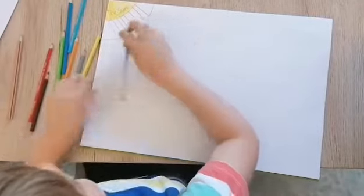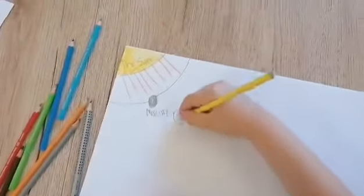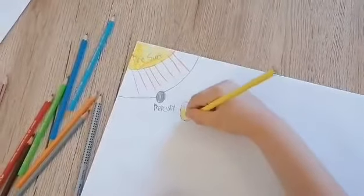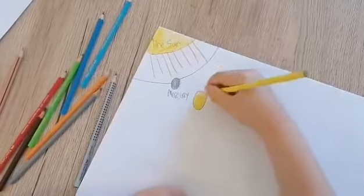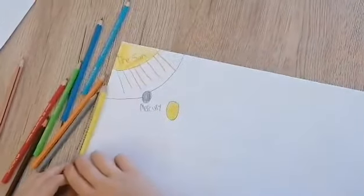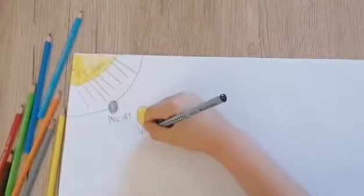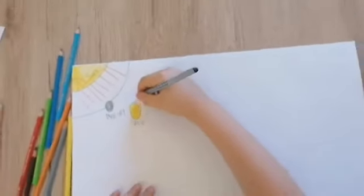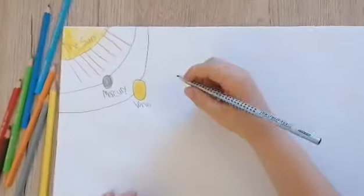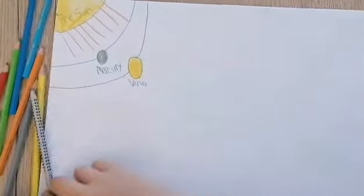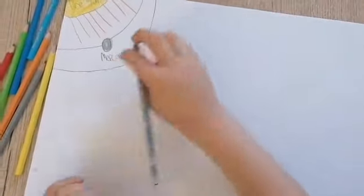Venus is the hottest planet of our solar system, but it's the second planet from the Sun. Venus here, and Venus here, and there.